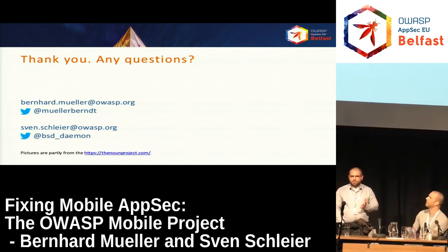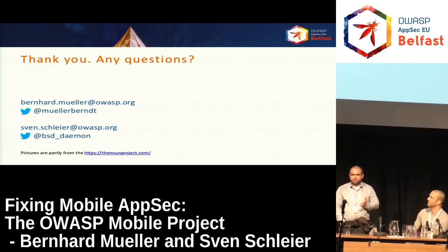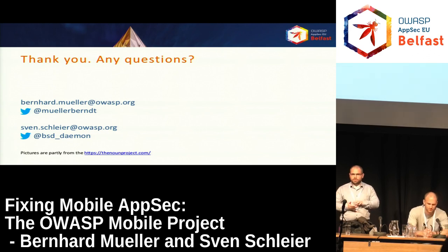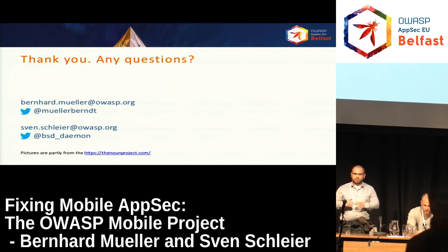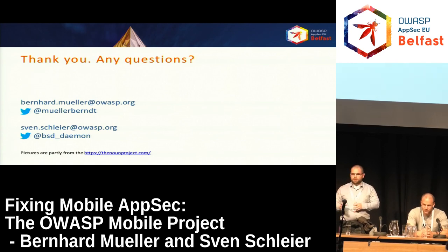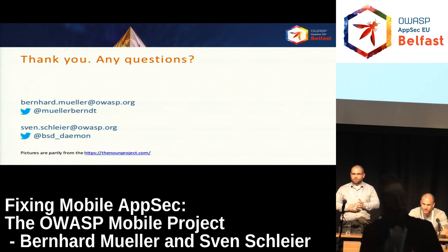For the MASVS, we already have a pre-release from January with some minor changes still pending. One of the challenges during the whole project was that the MASVS had too many changes while we were still working on the MSTG. The strategy was to first make a release of the MASVS and then really work with that as a basis for the MSTG. We hope to have a draft in Q3, a final version by the end of the year, and hopefully next year a printable book.